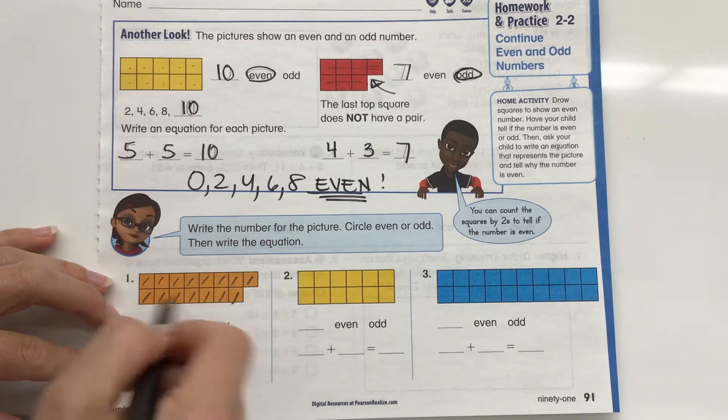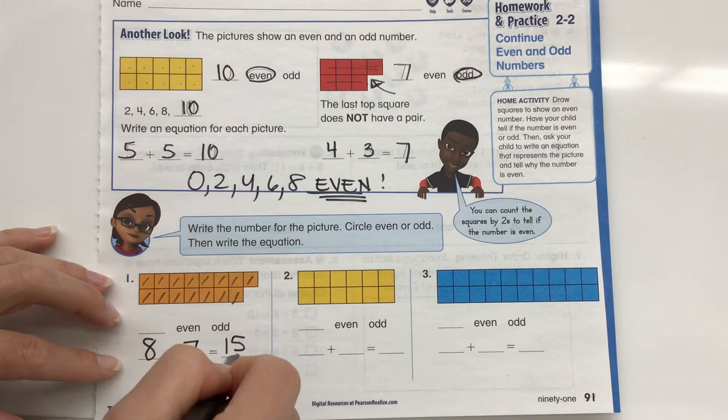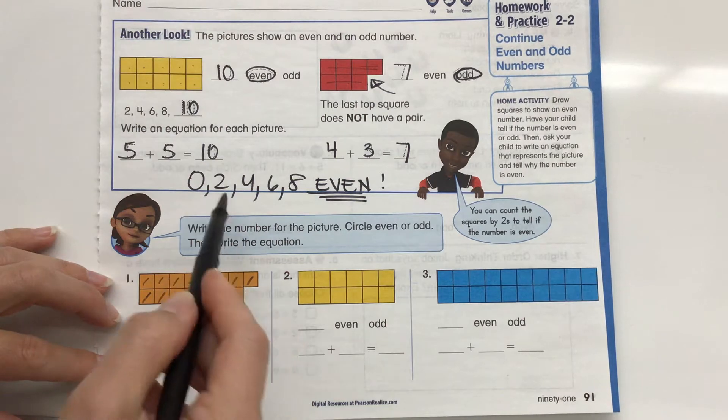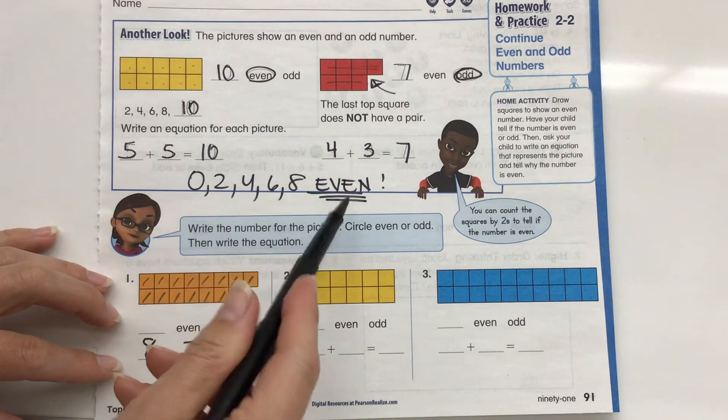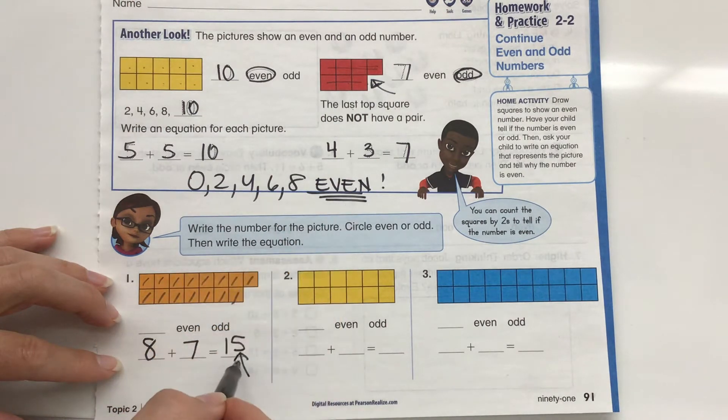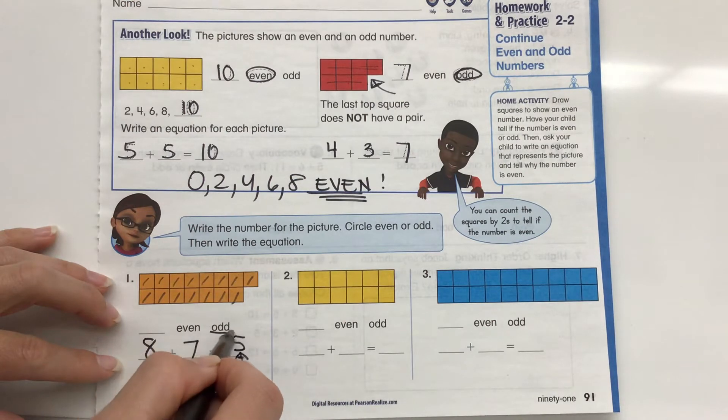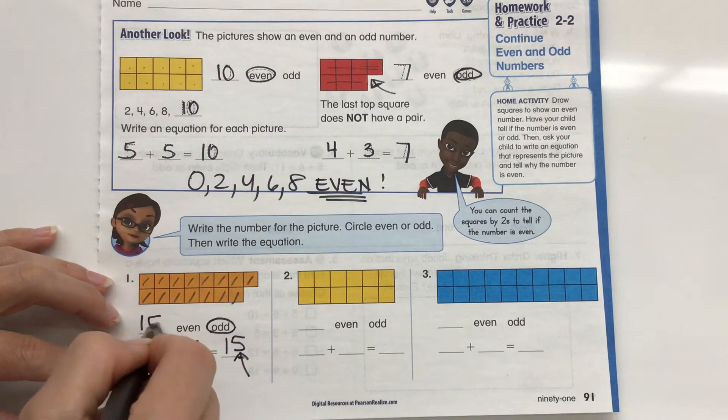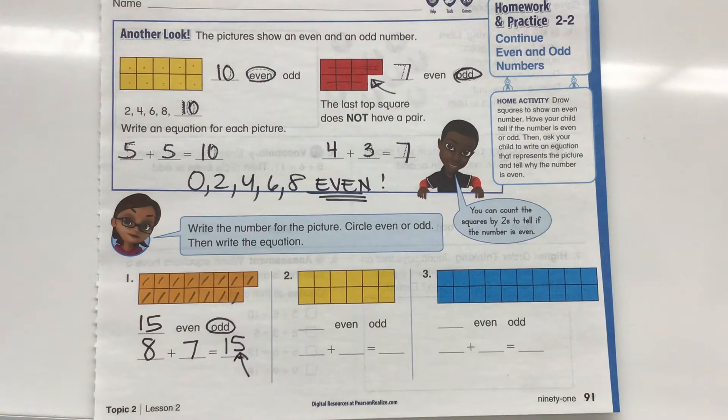So 8 plus 7 is 15. Let's take a look at that one's place. Is that a 0, 2, 4, 6, 8? Who do we appreciate? Even numbers. Do we appreciate even numbers? Nope. It's a 5. So it is an odd number. So our sum is 15, which is an odd number.